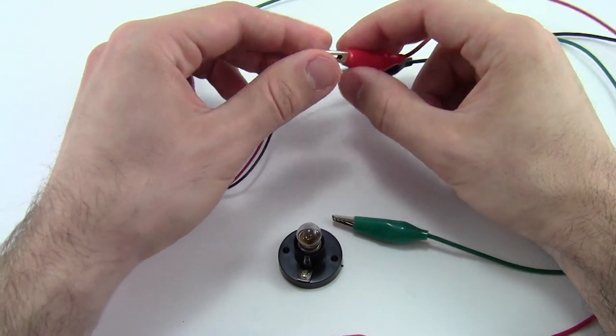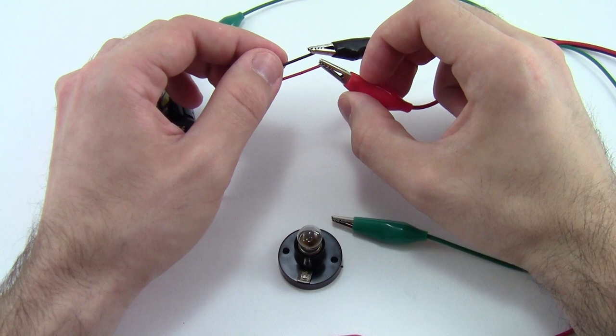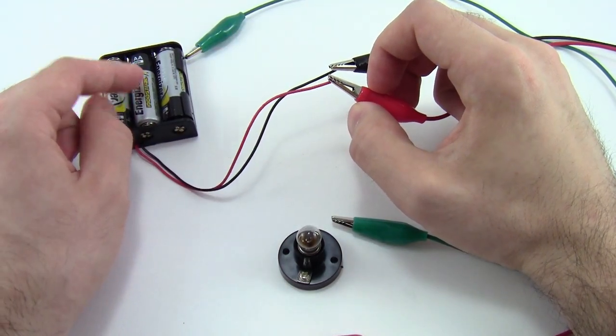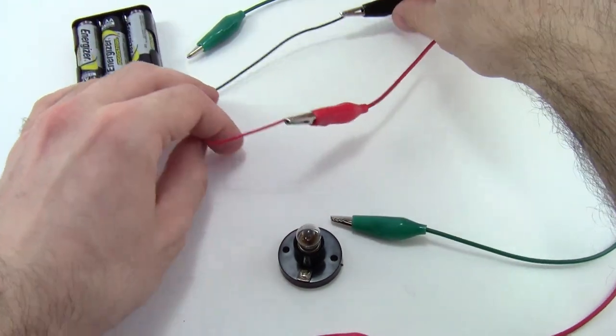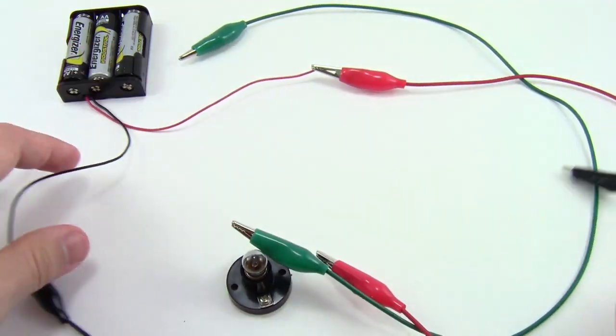Now here is one important safety note. At this point, you want to make sure that the red and black alligator clips do not touch each other directly. That will create a short circuit and can cause your battery pack to get very hot. So keep those nice and spaced out away from each other on your table so they don't bump into each other.